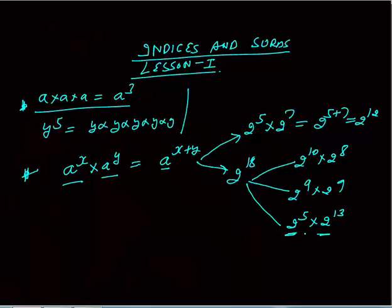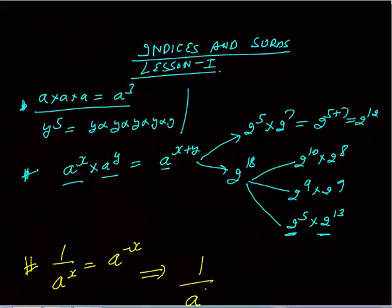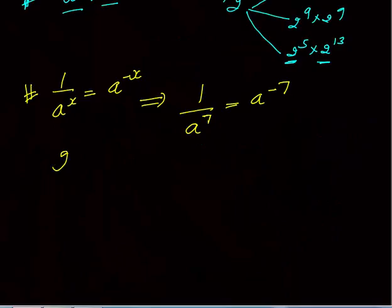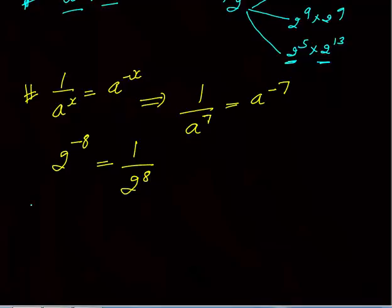Next: 1 upon A raised to the power X equals A raised to the power minus X. For example, 1 upon A raised to the power 7 becomes A raised to the power minus 7. Or if something is 2 raised to the power minus 8, that automatically means it is equal to 1 upon 2 raised to the power 8.